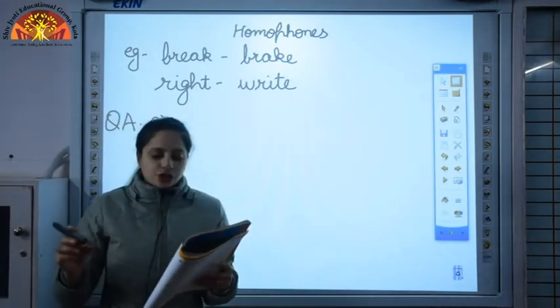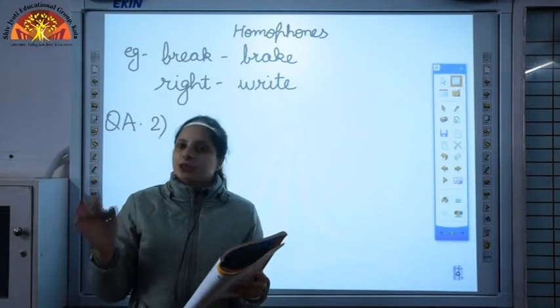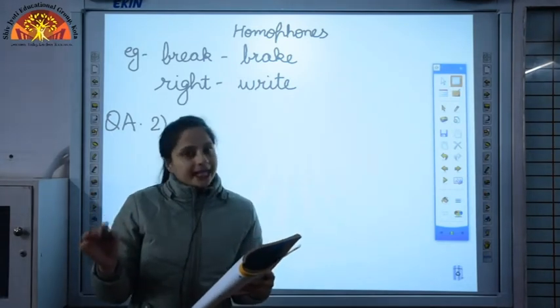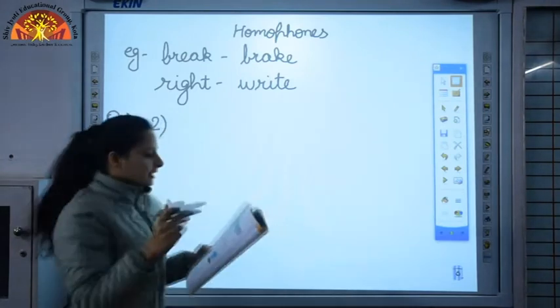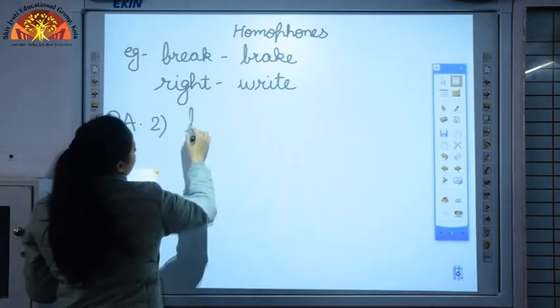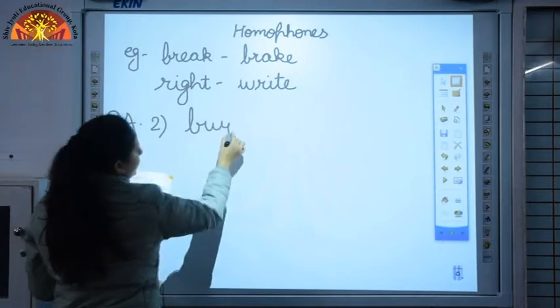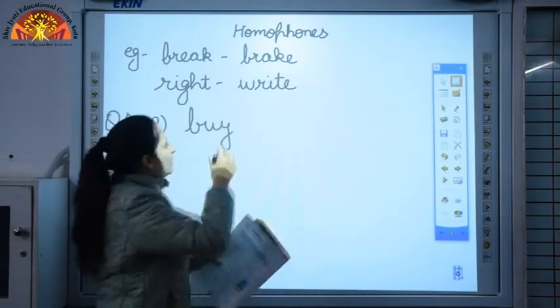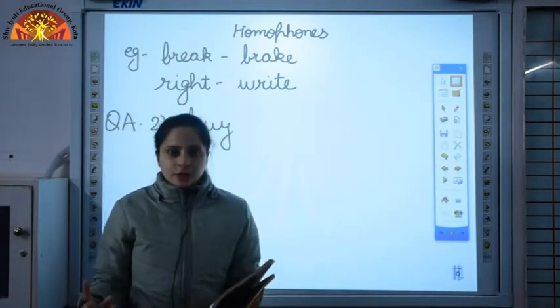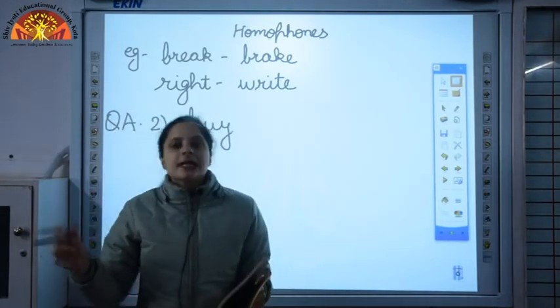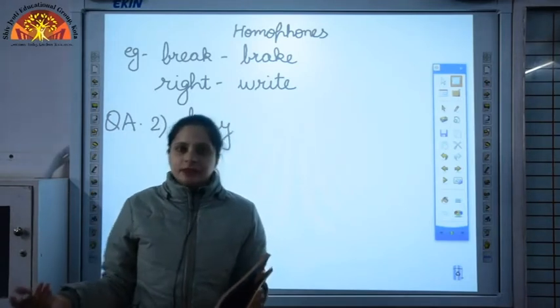Ravi wants to blank a pencil. You have been given B-Y-E buy or B-U-Y buy. So which one will be the correct? The correct answer will be B-U-Y. Ravi wants to buy a pencil. This buy over here means to purchase, and B-Y-E means when you say goodbye to someone.